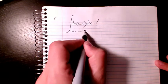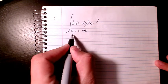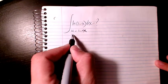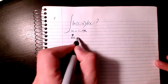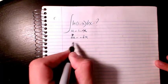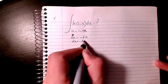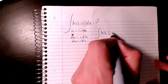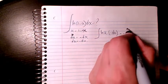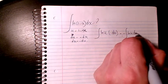So u is going to be 1-x, so du will be negative dx, or dx will be negative du. So it will change to ln(u) negative du, so it will be negative ln(u)du.